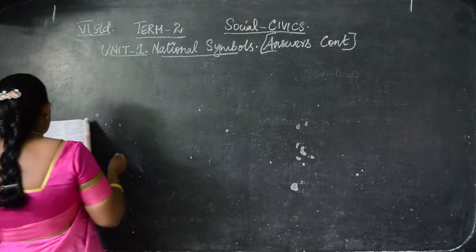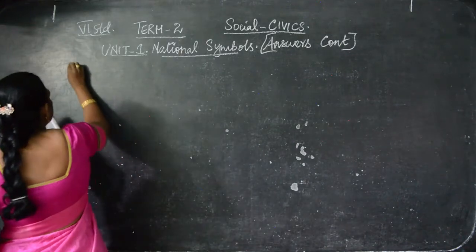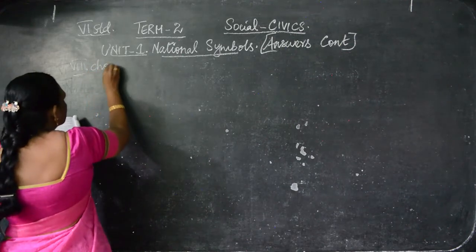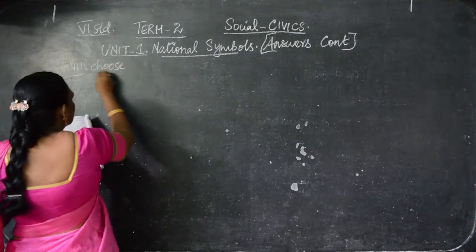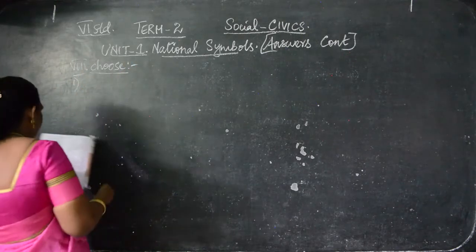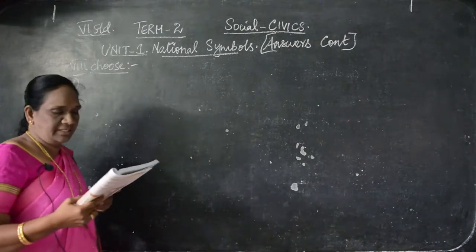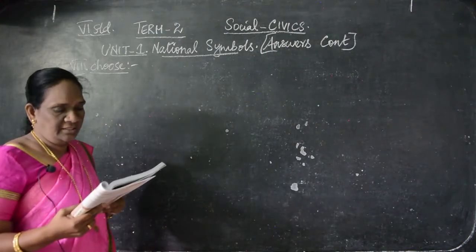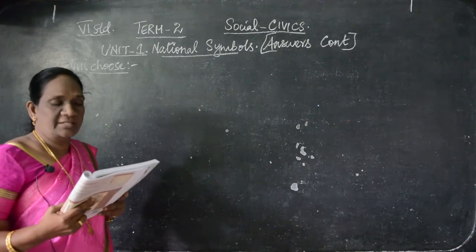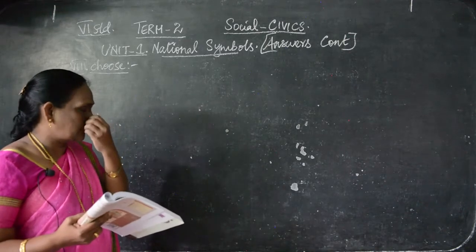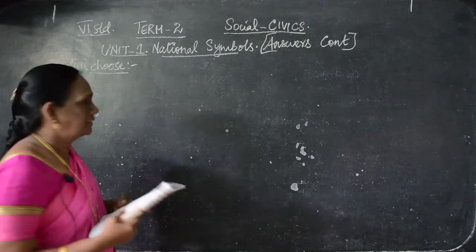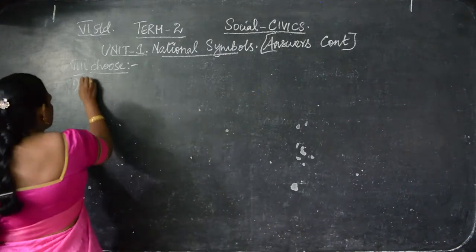Roman letter 8 is 'choose the correct sentence.' Which sentence is correct? Option A: August 15 is celebrated as Independence Day. Option B: November 26 is celebrated as Republic Day. Option C: October 12 is celebrated as Gandhi Jayanti. The correct answer is A — August 15 is celebrated as Independence Day.